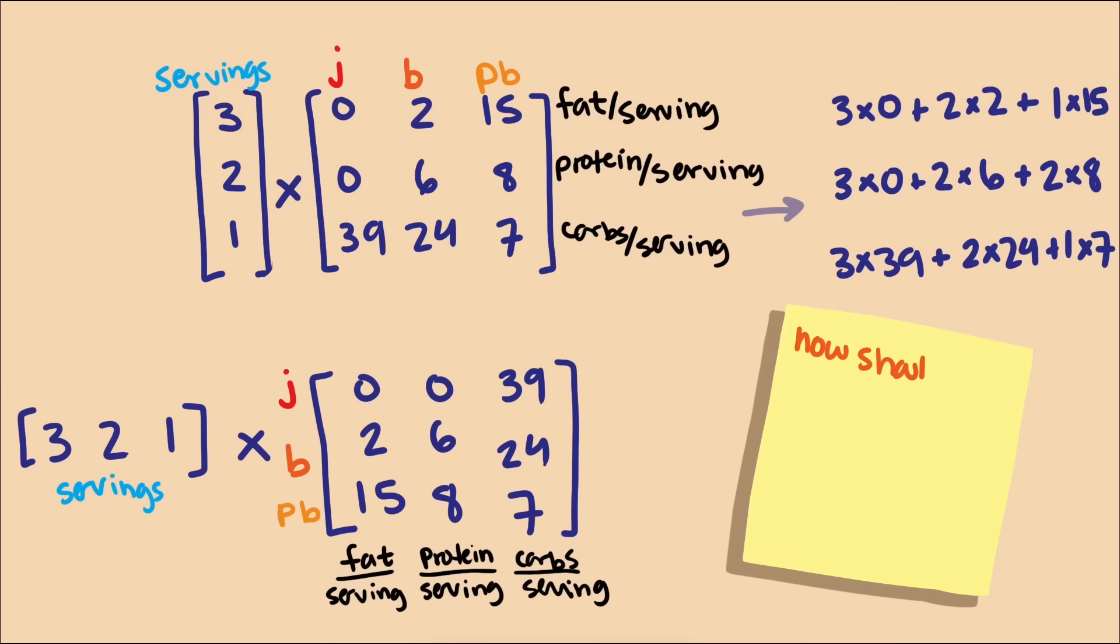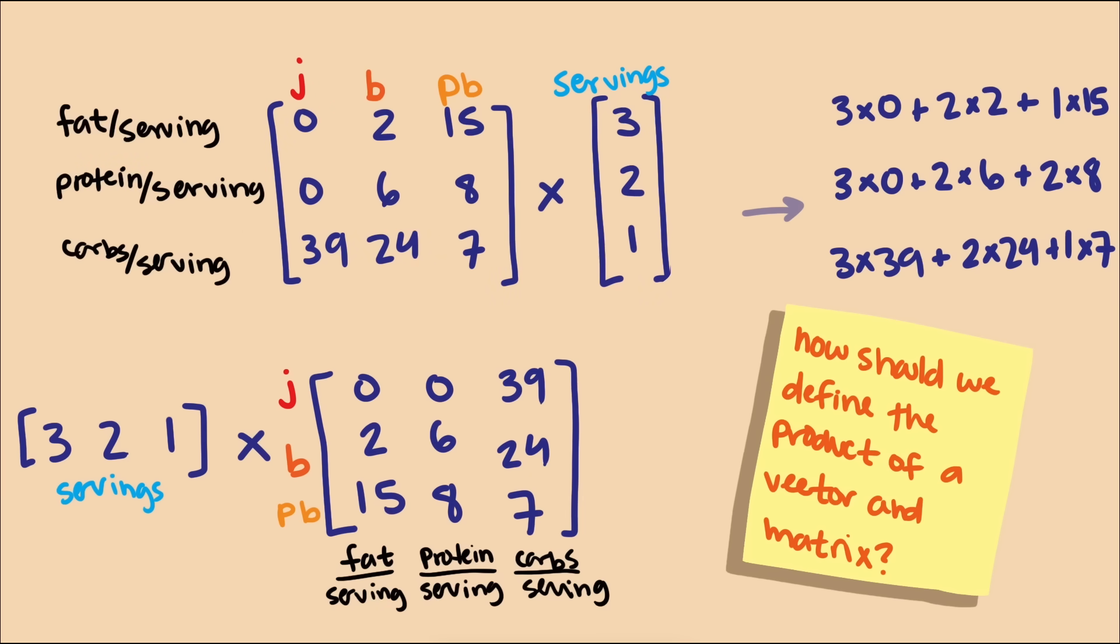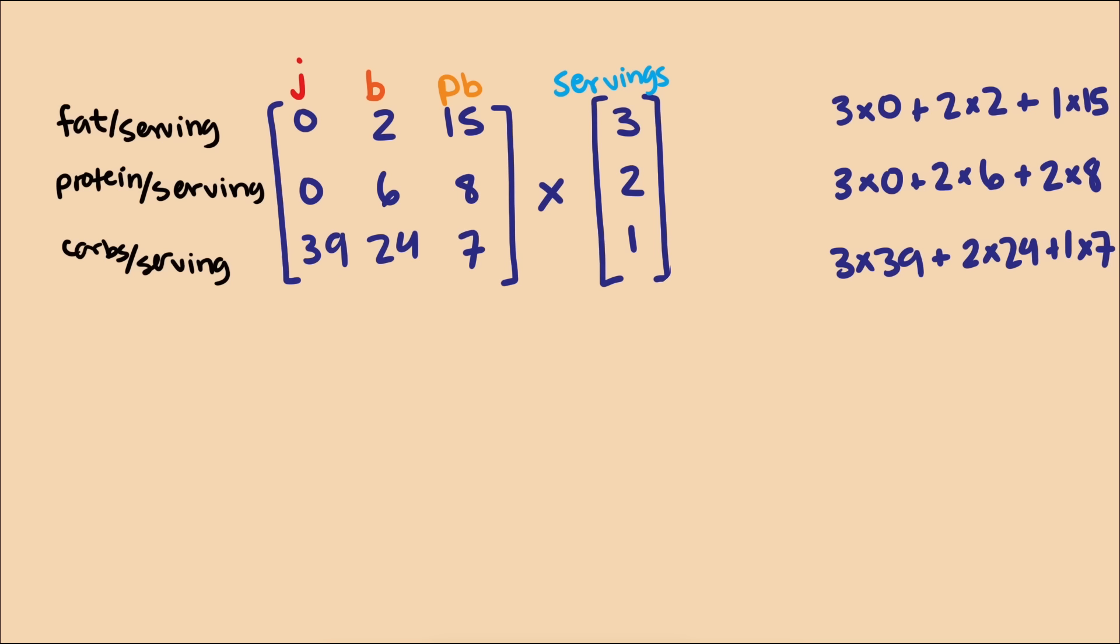Okay, we're still left with the questions, how should we define the product of a matrix and a vector, and should it matter how we write the matrix and the vector? When units are involved, they help guide us towards the right operation and tell us what the new vector should look like. For example, we know that the number of servings of bread should align with the bread vector to make sure the quantities match correctly. As a note, I'm going to focus on the multiplication of a matrix and a vector with the vector on the right, since that is more common. One helpful strategy is to think about the vector we want to get after the multiplication.